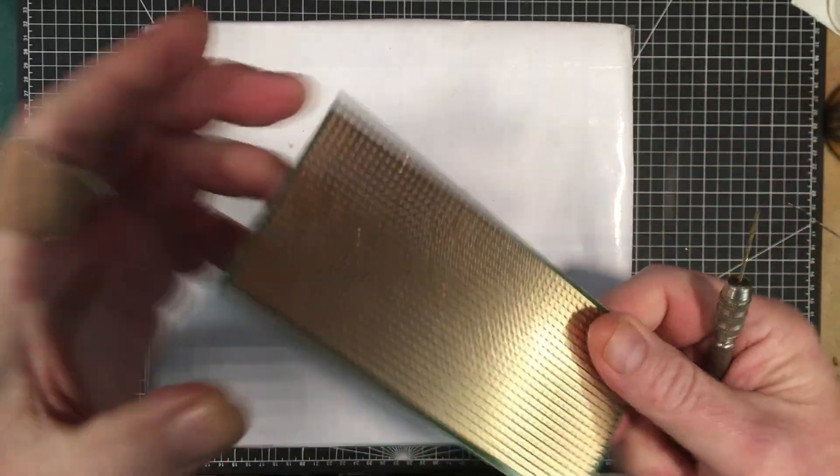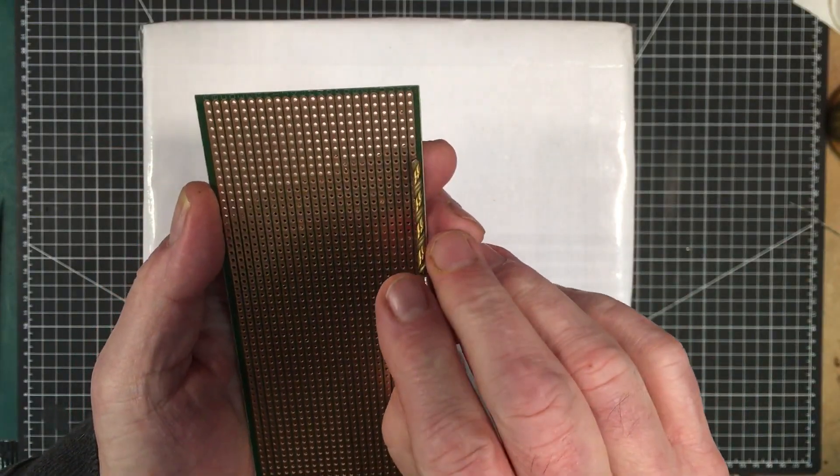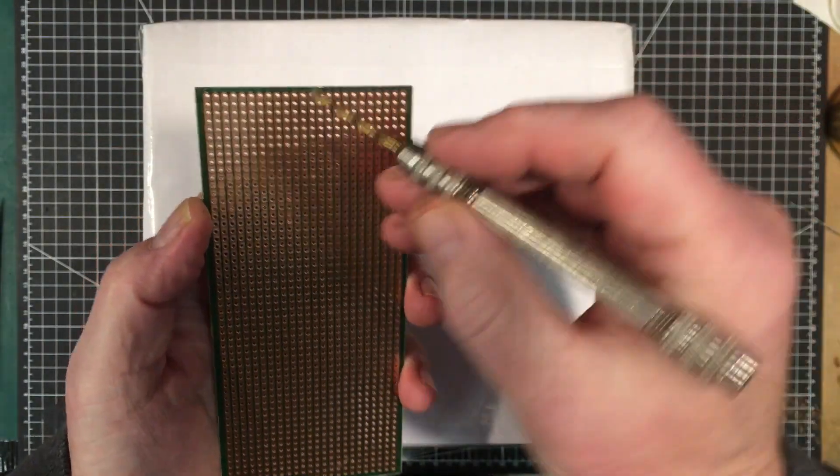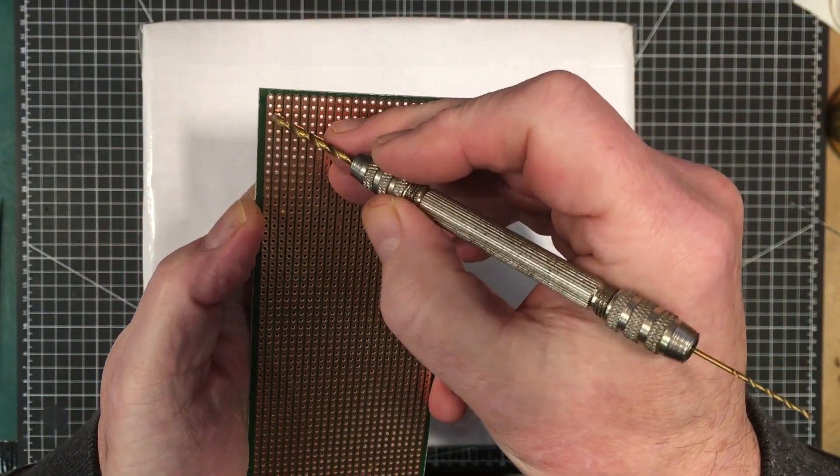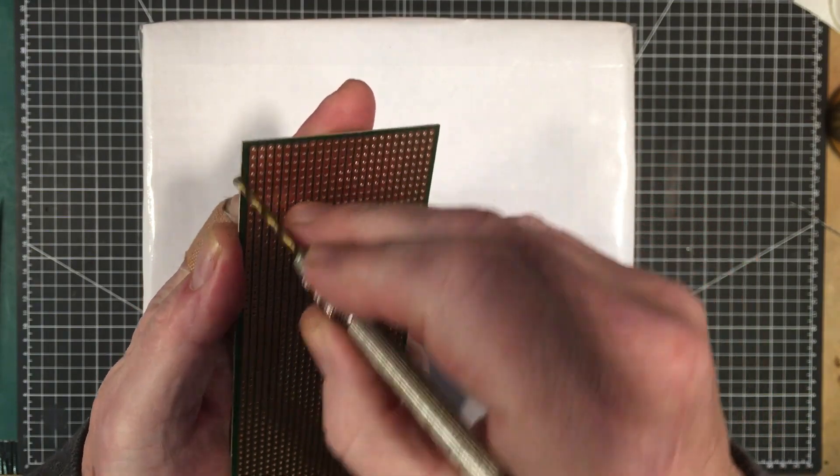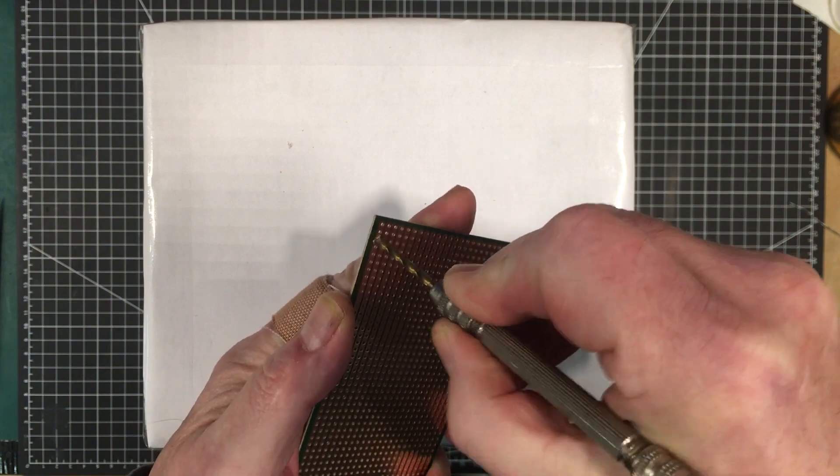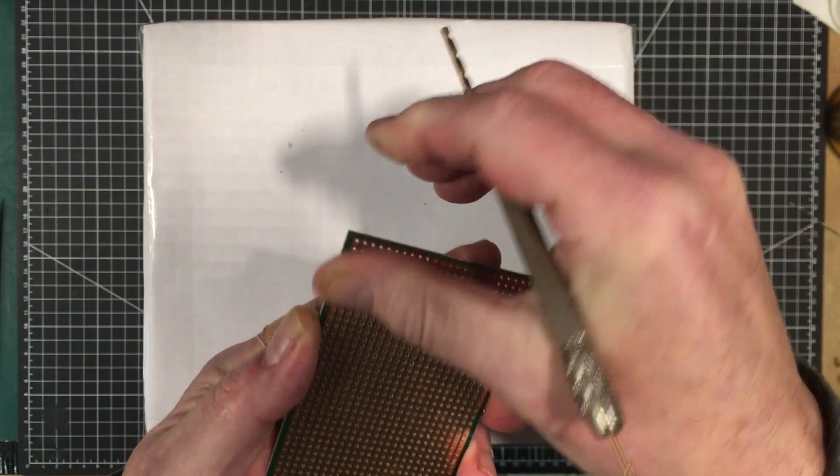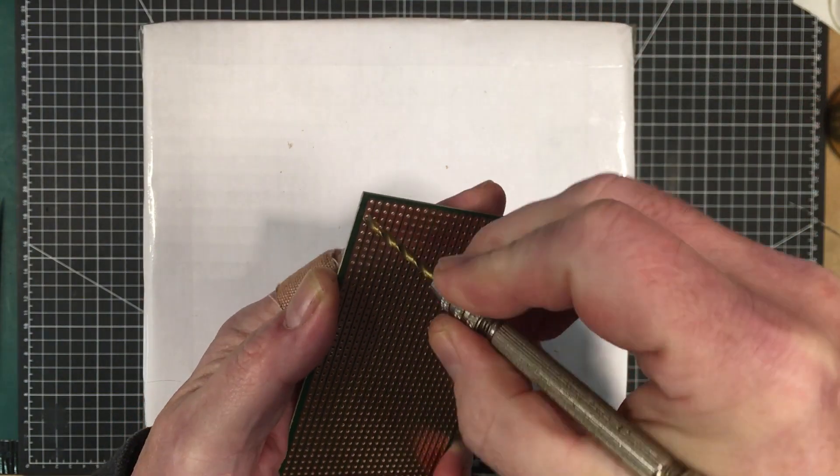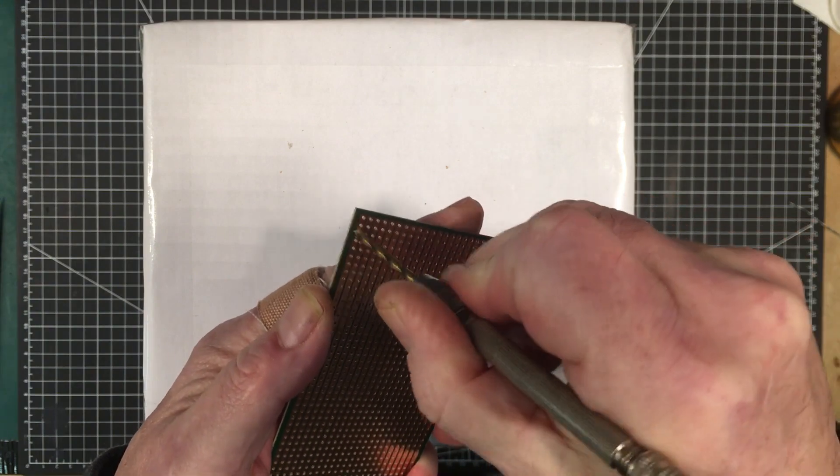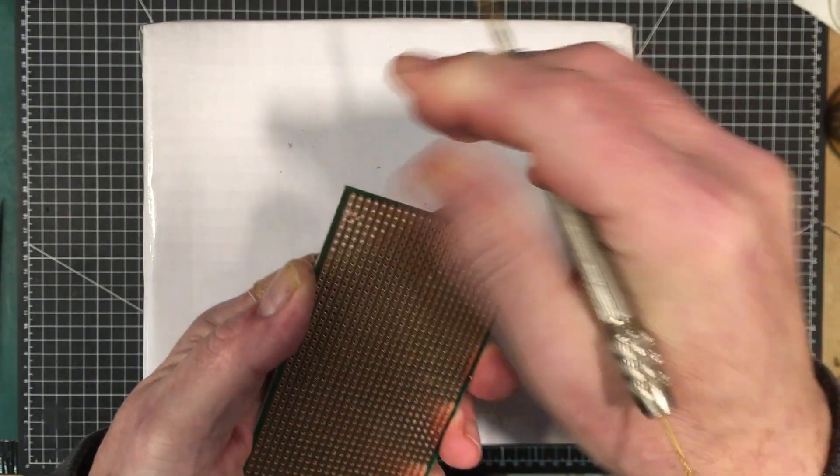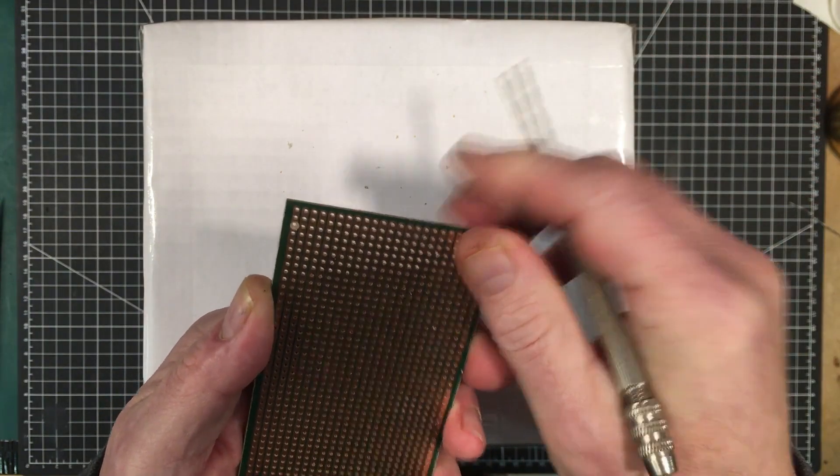If I wanted to put in a component and break that point there, I would just line up the drill with the hole at that point and a couple little twists later I've removed the copper. It's a much quicker simpler process than using a knife.